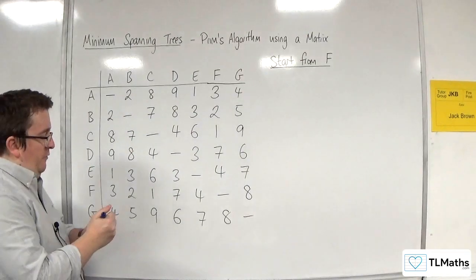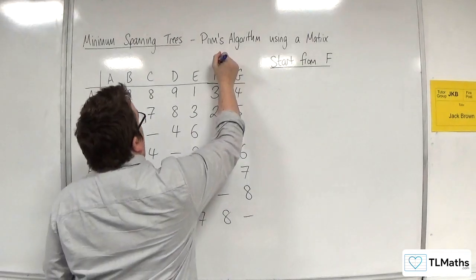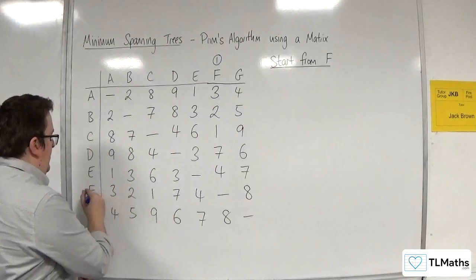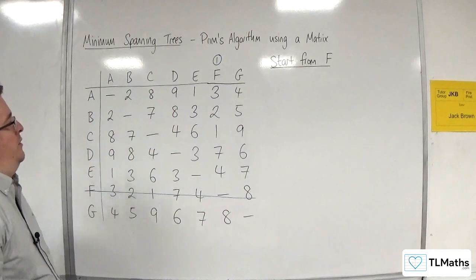Starting from F, that means I'm going to put the number 1 above F, and I delete row F, which stops cycles occurring.